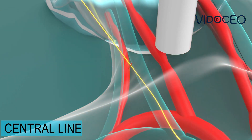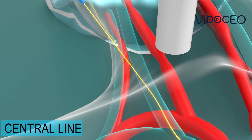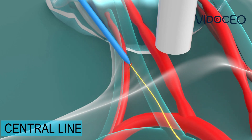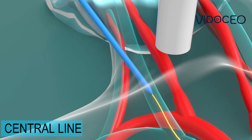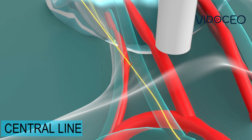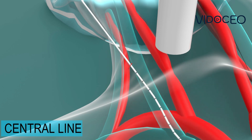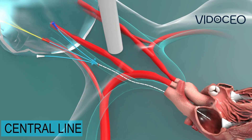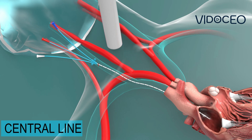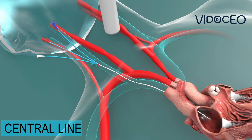The needle is removed and a plastic dilator is used to ensure that the track through the tissue around the wire will allow the catheter to fit into the vein. Then the final central venous catheter is placed using the wire as a guide, aiming to have the tip of the catheter in the large blood vessels inside of the chest.